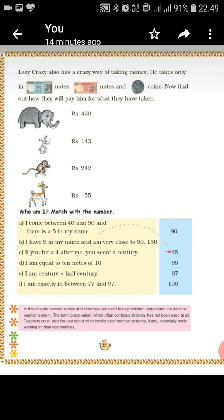100 rupee notes are 4 in number, which means rupees 400, and 10 rupee notes are 2 in number, so 20 rupees. Rupees 400 plus 20 rupees is equal to rupees 420.